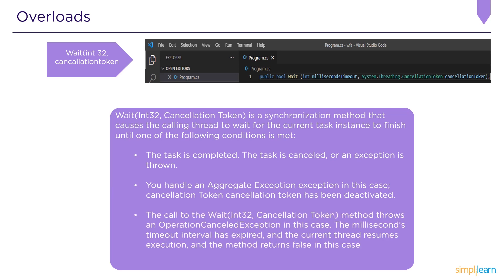Wait(Int32, CancellationToken) is a synchronization method that causes the calling thread to wait for the current task instance to finish until one of the following conditions is met: the task completes, the task is cancelled or an exception is thrown — handle an AggregateException — the cancellation token is deactivated throwing an OperationCancelledException, or the milliseconds timeout interval expires and the method returns false.